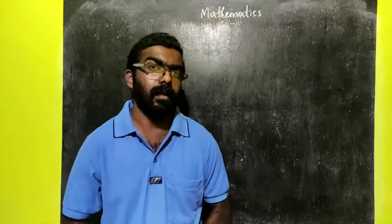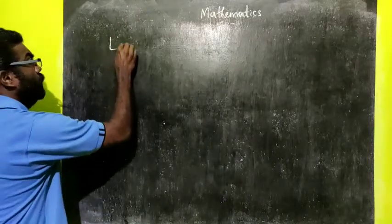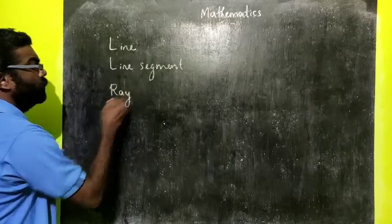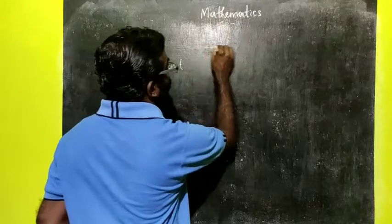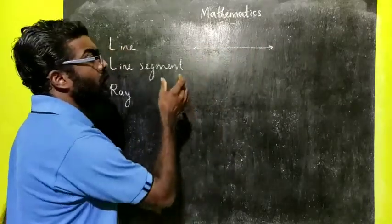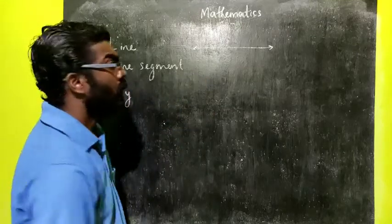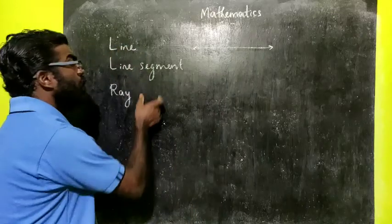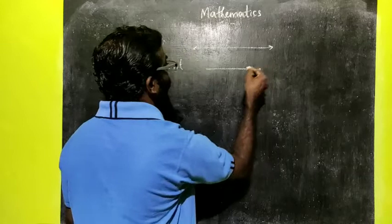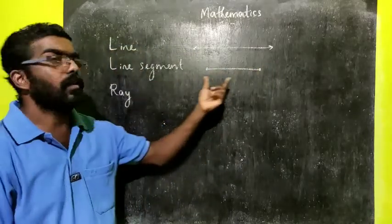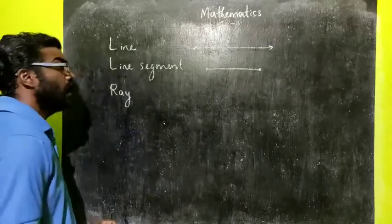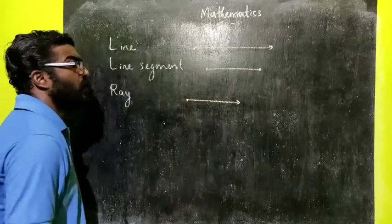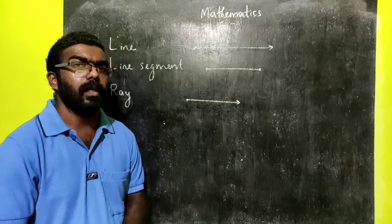We all know line, line segment and ray. What's the difference between them? A line can be extended indefinitely on either side. It is a collection of points which lie on the same line, extended indefinitely on both sides. A line segment is a part of a line which has two endpoints. And a ray is also a part of a line which has one endpoint — one initial point but no terminal point. It is called a ray.